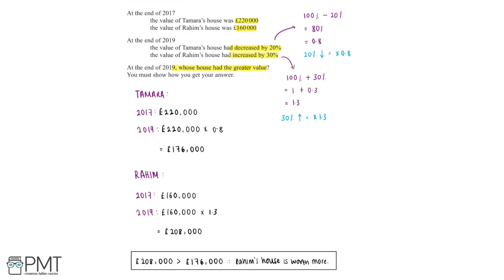This question was worth four marks. We get the first mark for identifying that a decrease of 20% means we multiply by 0.8, and an increase of 30% means we multiply by 1.3. We get the second mark for finding Tamara's house value at the end of 2019. We get the third mark for finding Raheem's house value at the end of 2019. And we get the fourth and final mark for concluding that £208,000 is greater than £176,000, so Raheem's house was worth more at the end of 2019.